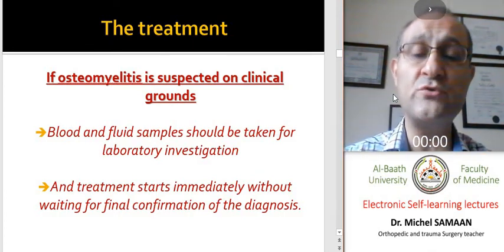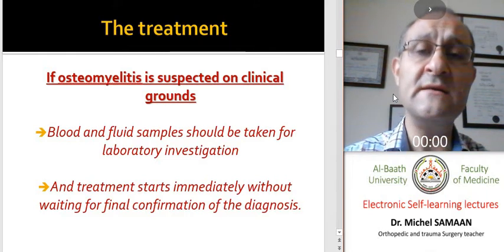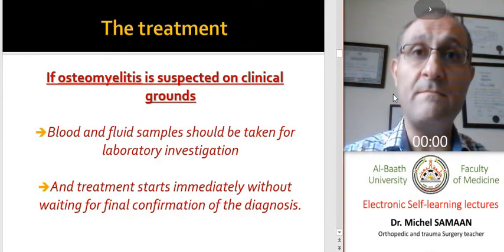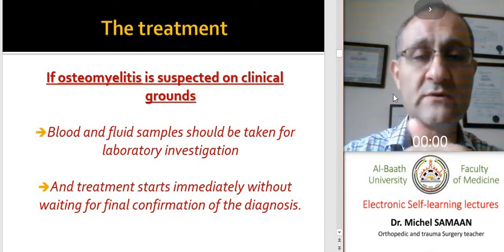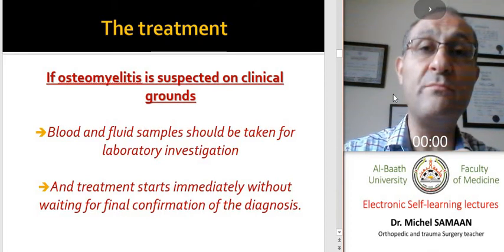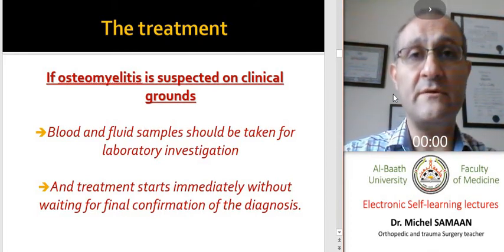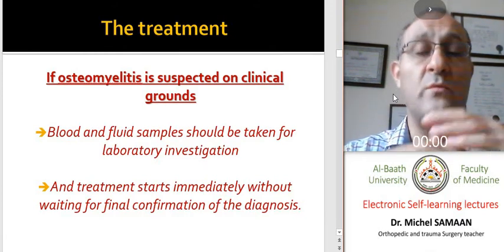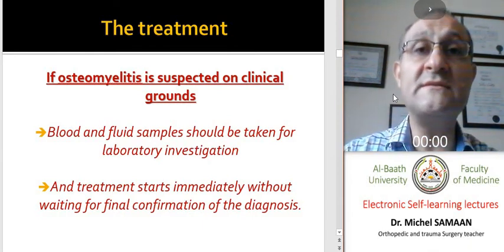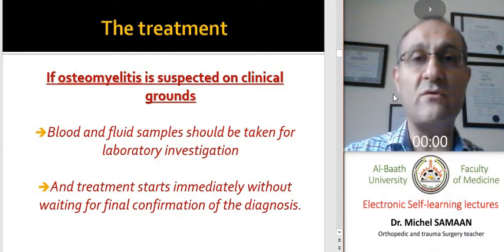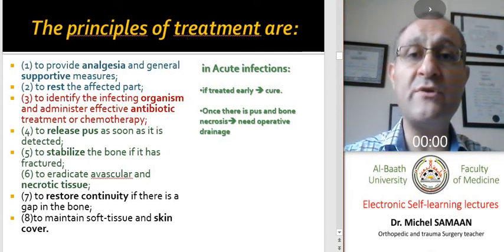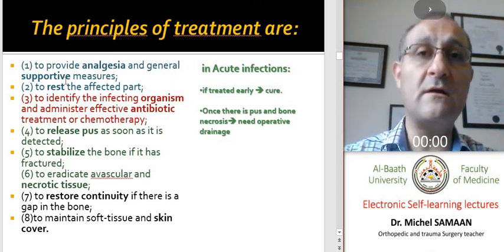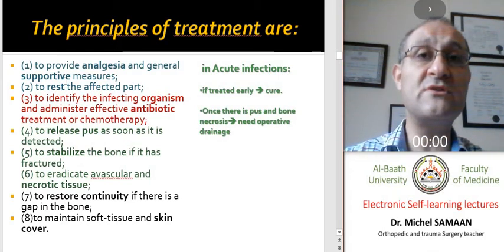If pus is present, we make drainage of the abscess and clean the area of infection using a lot of irrigation fluid. We also make holes in the infected bone to decrease the pressure inside the bone, which will alleviate the pain and decrease the risk of sequestrum formation. Other supportive measures include analgesia, good intravenous fluids especially for exhausted patients, rest, and splinting.